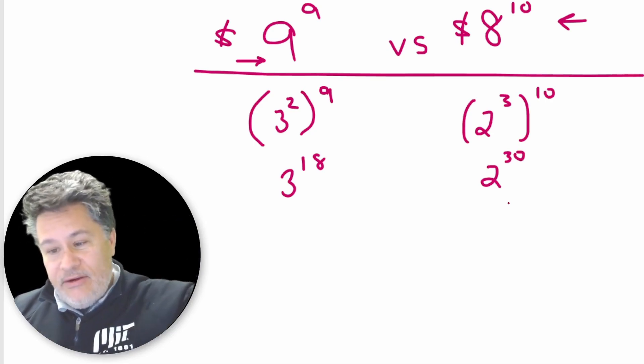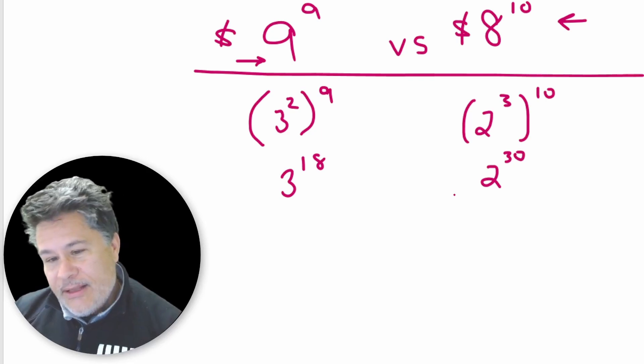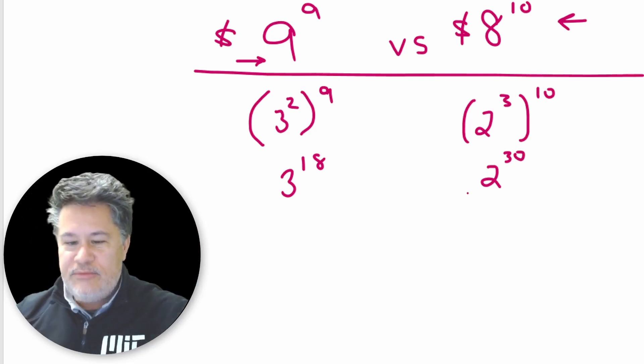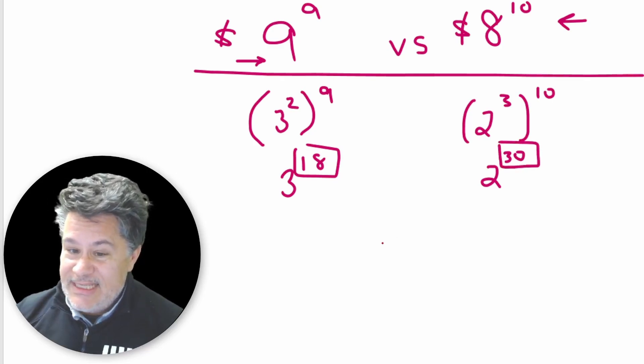Eighteen threes multiplied together or thirty twos? But we can figure that out because we don't really care about what the actual values are, just which one is bigger. Now, would you guys agree that there is a common factor between the eighteen and the thirty? And the greatest common factor, of course, would be a six.